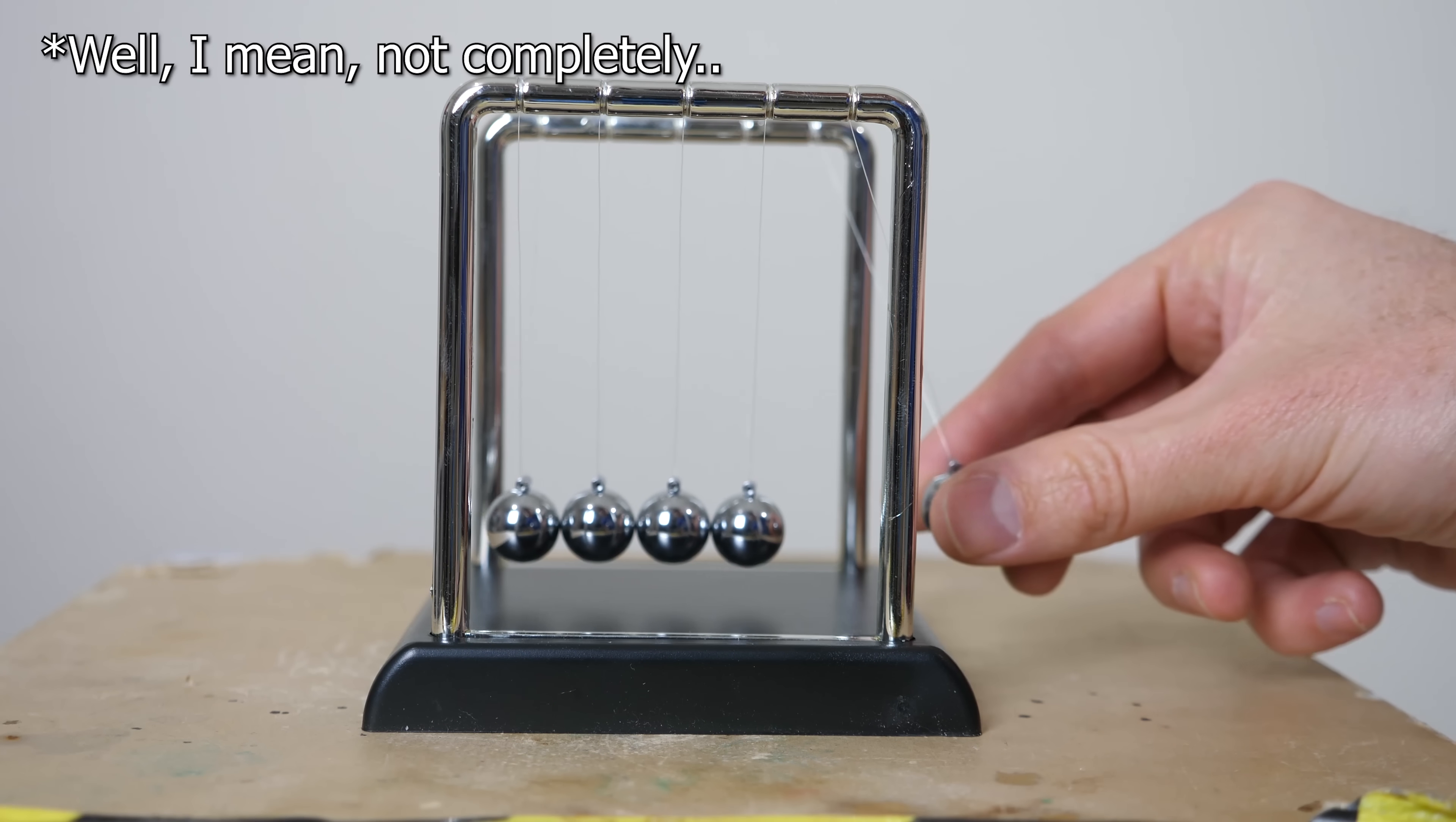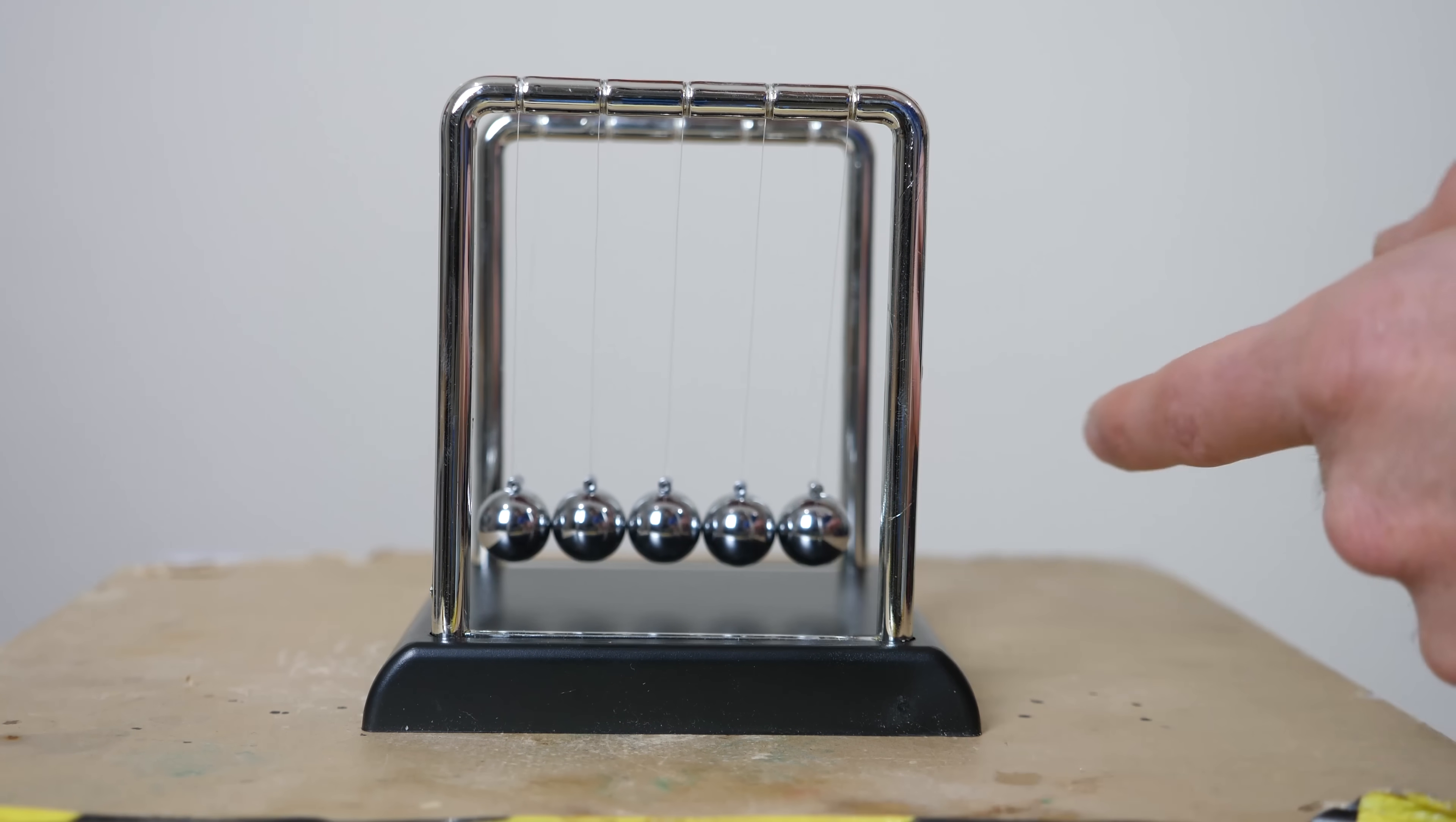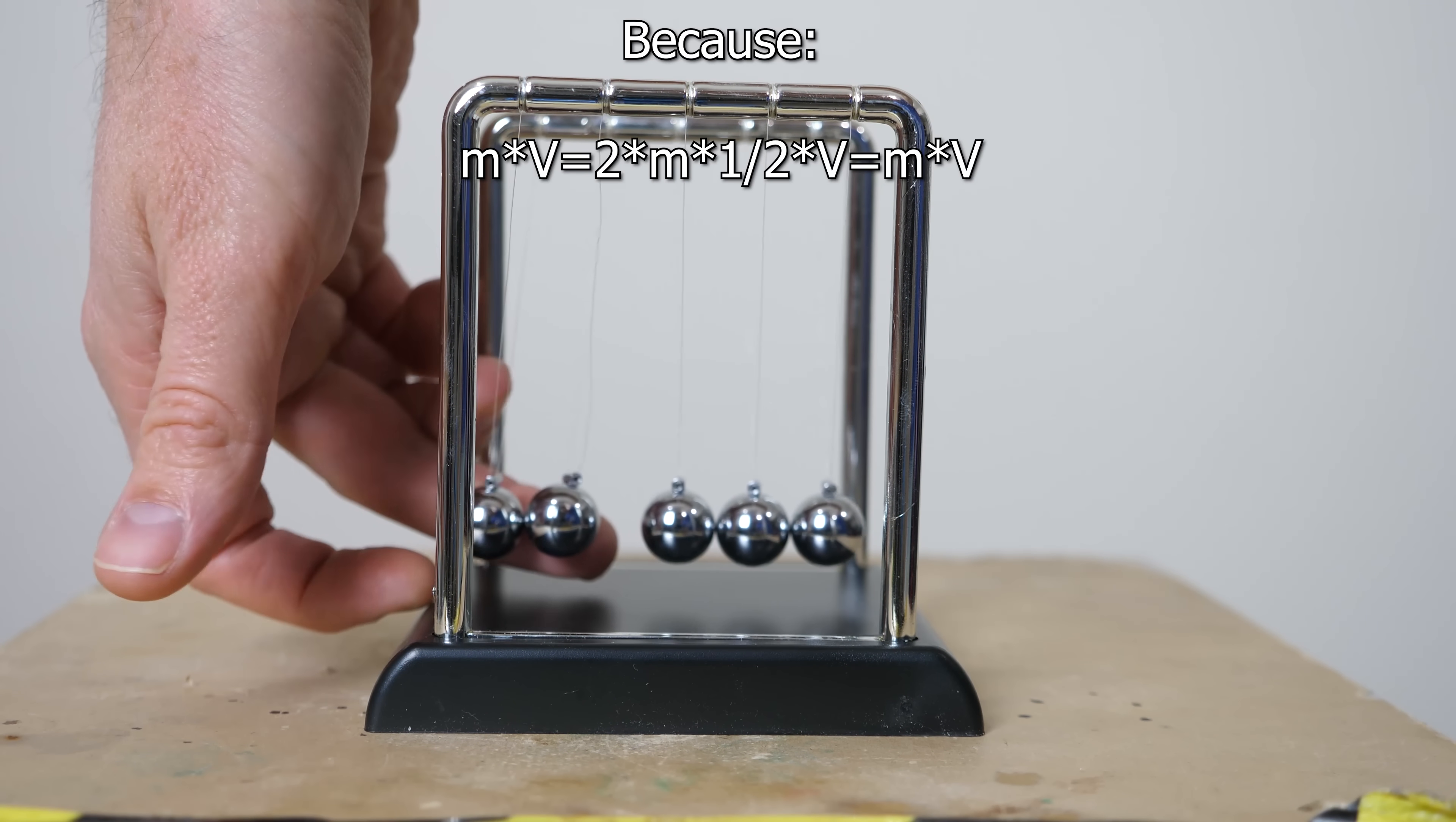That's because, for example, momentum would still be conserved if I let a ball go and it hits here, and then instead of one flying off the end, two fly off the end, but at lower speed, at half the velocity.